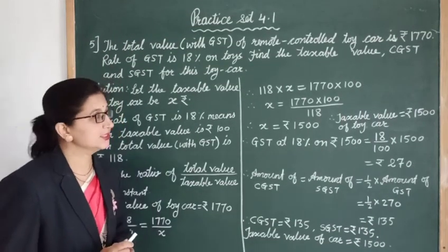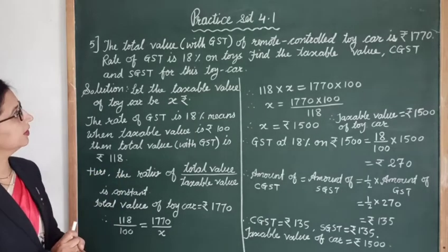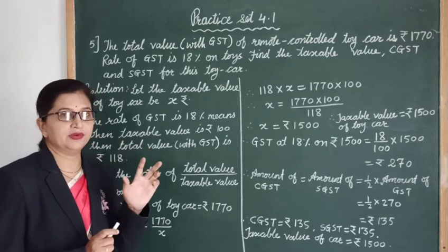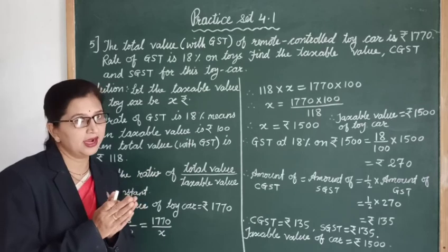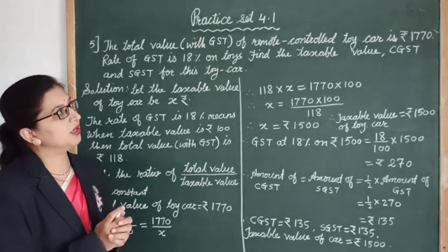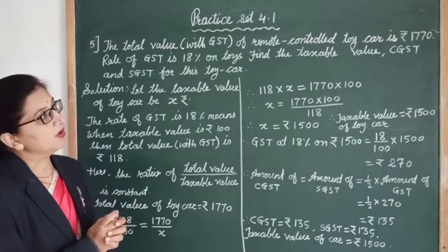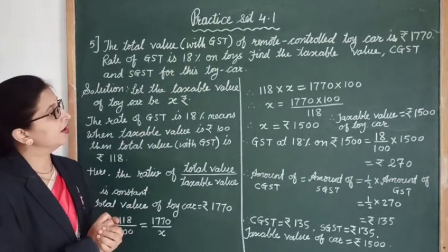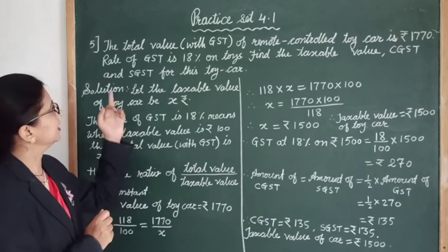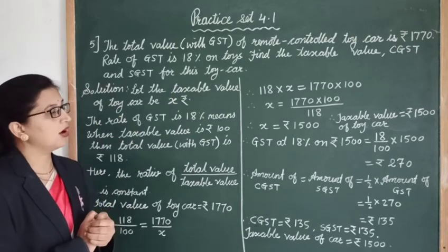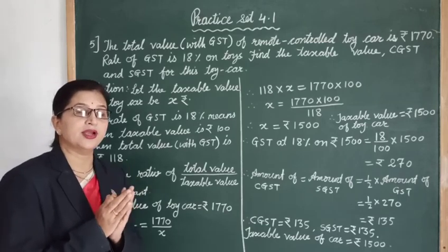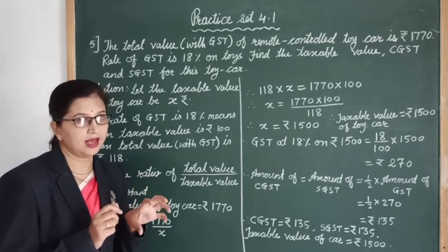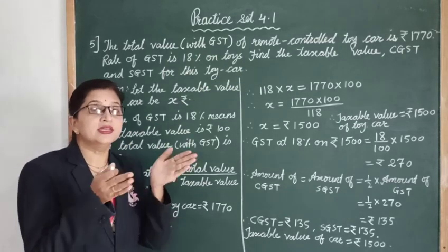Let's see the next example — question number 5. Here the total value with GST is given. Whenever we get the total value, it means GST is already added. The total value of a remote control toy car is 1770 rupees. Rate of GST is 18% on toys. We need to find the taxable value, CGST, and SGST for this toy car — meaning the original cost before GST.